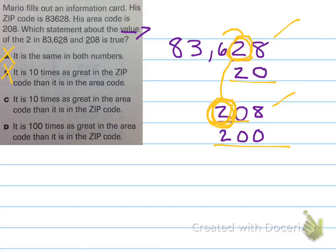C, it is 10 times as great in the area code than the zip code. Hey, I think that's what I'm trying to say. Let me check the letter D to make sure that doesn't work either.